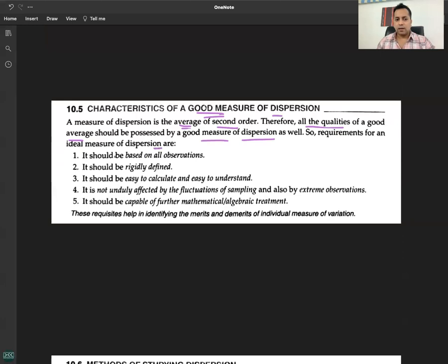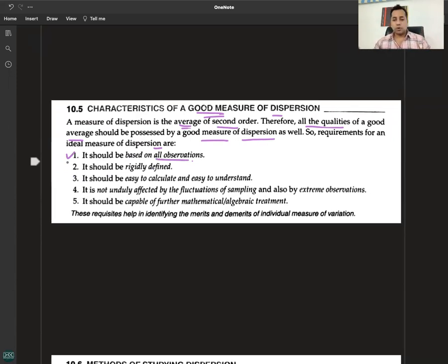So the requirements for an ideal measure of dispersion are: Number one, it should be based on all observations. All the observations must be taken into consideration.